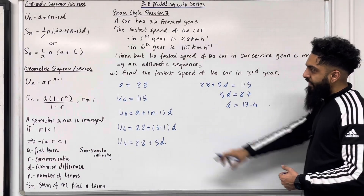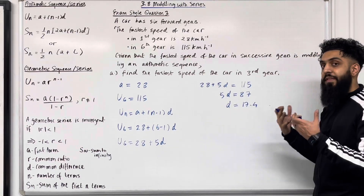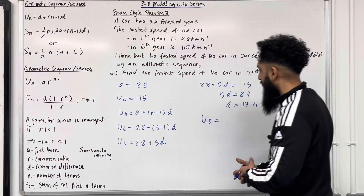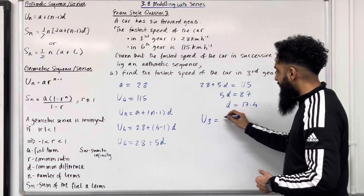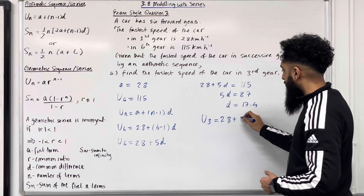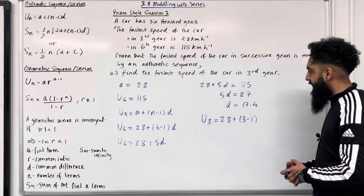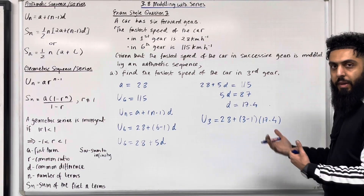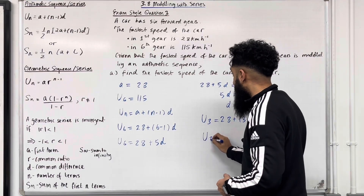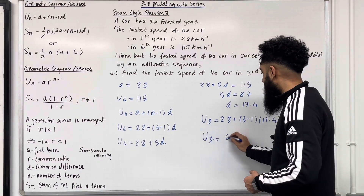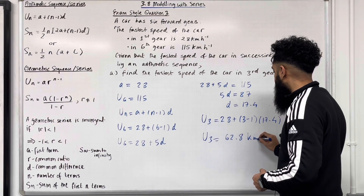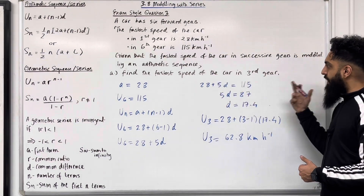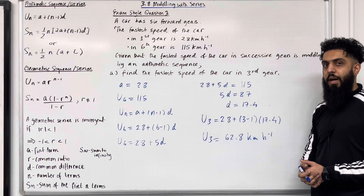Now we find the fastest speed in third gear, calculating U₃. U₃ = 28 + (3 − 1) × 17.4. Putting this into the calculator gives U₃ = 62.8 km/h. So the fastest speed of the car in third gear is 62.8 kilometres per hour.